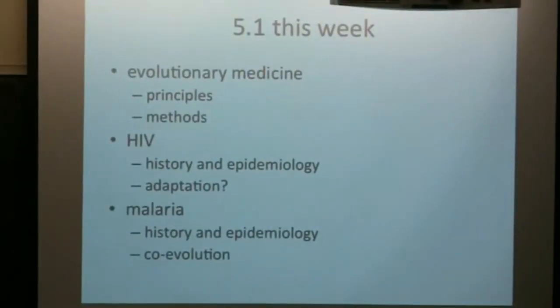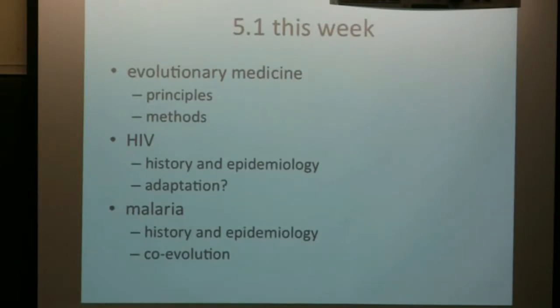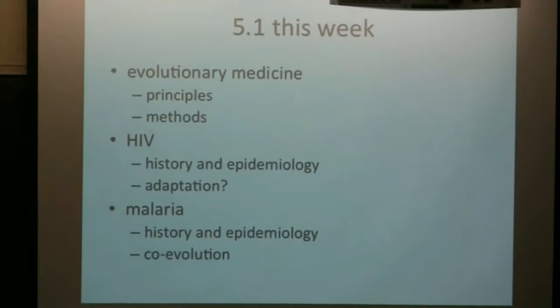We're also going to talk about the method itself of evolutionary medicine — how you can ask questions. Could we develop a rubric or a toolkit for learning about a specific disease, a specific phenomenon, and figuring out what its reason for being is? Then we've got two case studies: HIV and malaria. These are both areas that are close to my heart. I've done a lot of work on these topics and I'm kind of excited that we get the chance to talk about them today.